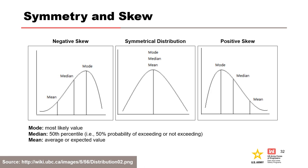Triangular and PERT distributions, along with the log normal distribution, can be skewed. When there is negative skew, the mode or most likely value will be greater than the mean. When there is a positive skew, the mode will be less than the mean. When a distribution is symmetrical, the mode, median, and mean will all be equal. The mean is the centroid or center of mass of the distribution.